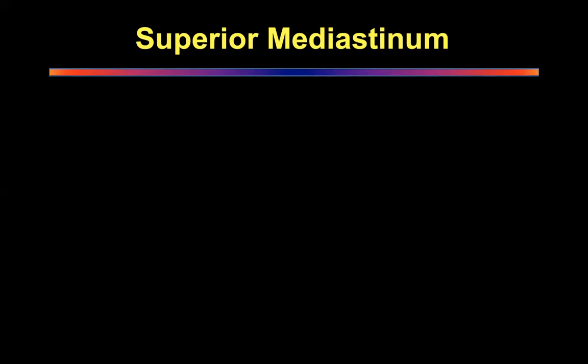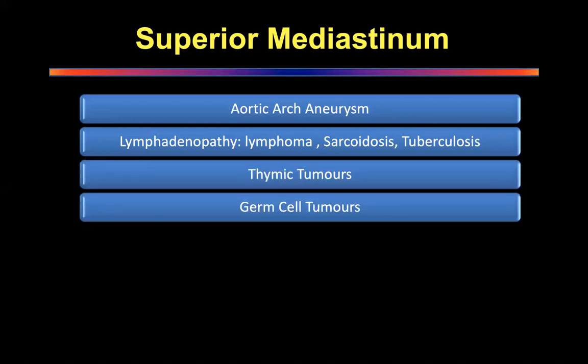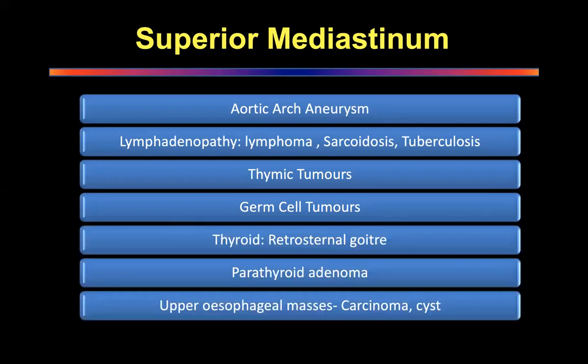What is present in the superior mediastinum? Anteriorly: the left brachiocephalic vein and thymus gland, followed posteriorly by trachea and then esophagus, and lymph nodes. The arch of the aorta comes slightly above that dividing line, and if there is an aneurysm it will appear there. Masses in the esophagus will also appear there. Common pathologies include aortic arch aneurysms, lymphadenopathy, tumors from the thymus, germ cell tumors, retrosternal goiter, and parathyroid adenomas.